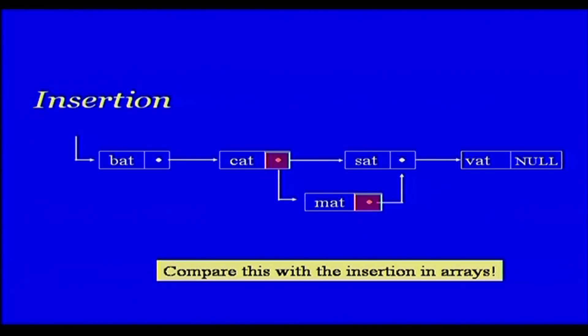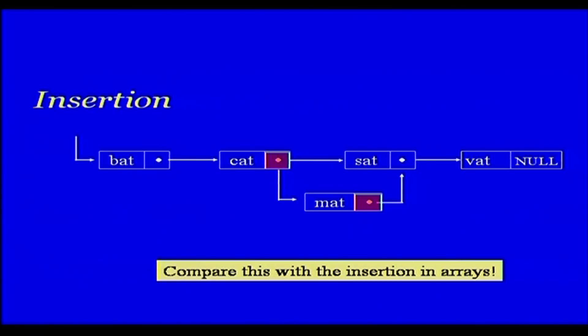This shows that when you are doing an insertion into a linked list, you are just changing two links, whereas when we were doing insertion of lists using arrays, we were actually changing the index of a number of elements. For example, if you had to add an element in the fifth position of a 1500-element array, from the sixth position up to 1500 you have to shift all elements. That is the costly operation, while insertion in a linked list is much easier.